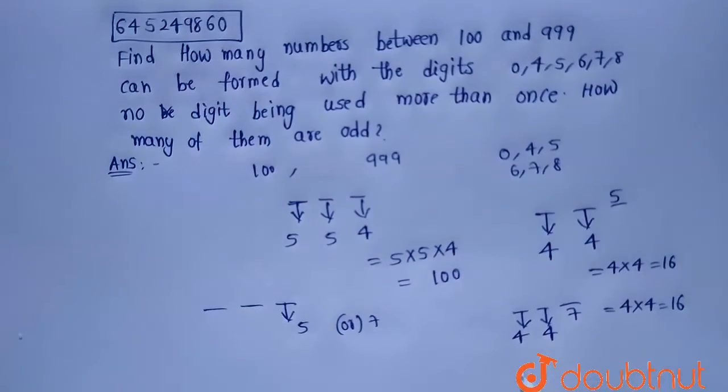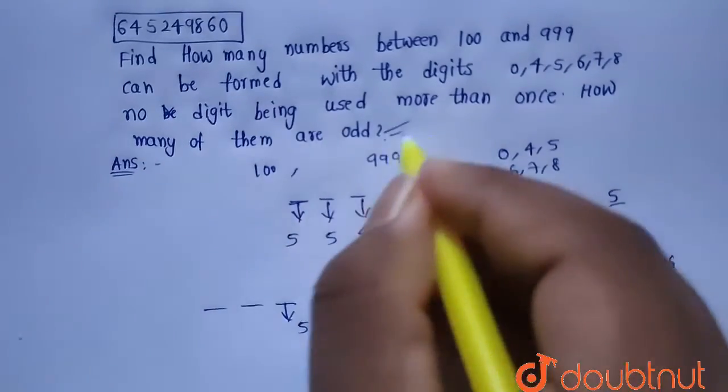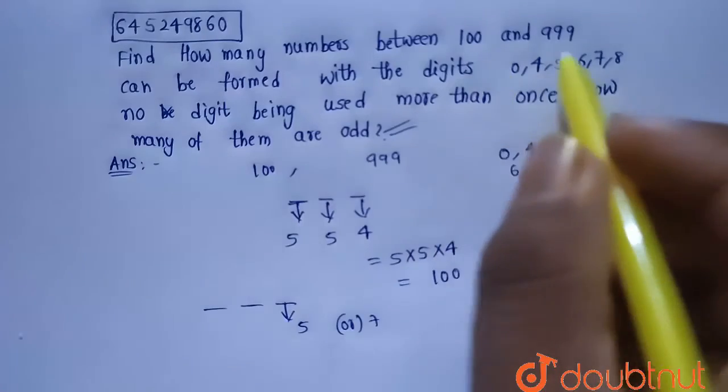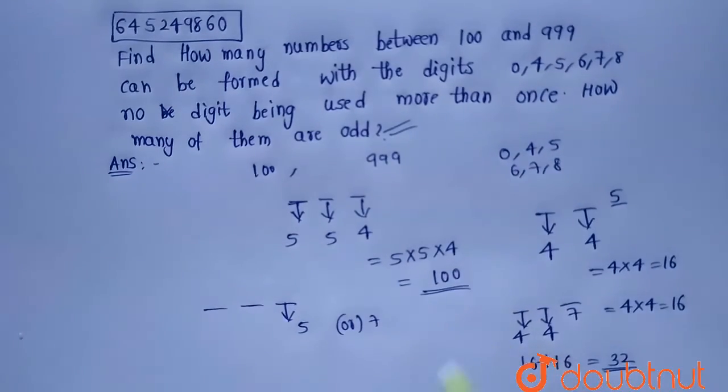So the total odd numbers are 16 + 16, that is nothing but 32. So the total odd numbers are 32 and the total numbers found between 100 and 999 satisfying this condition is 100 numbers.